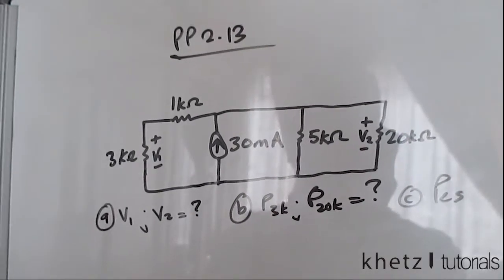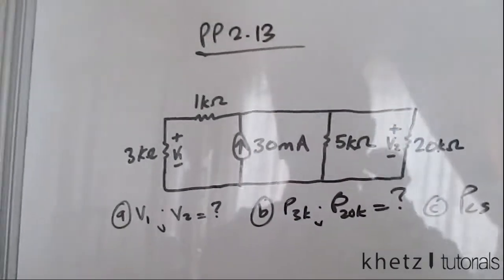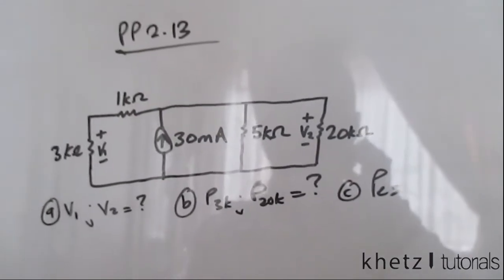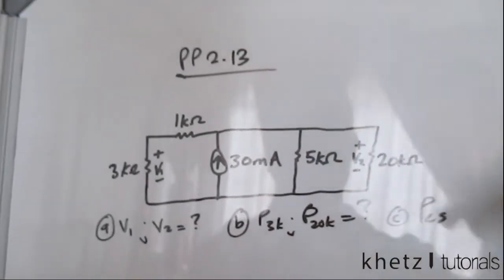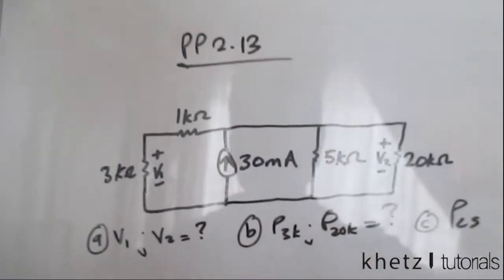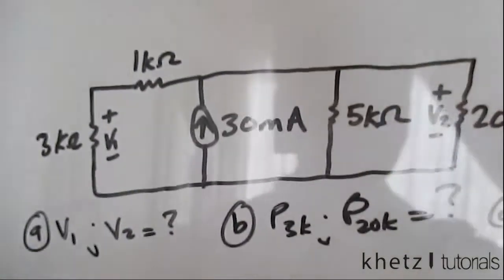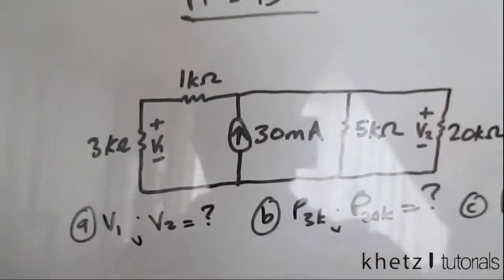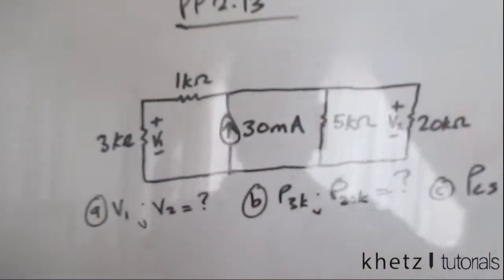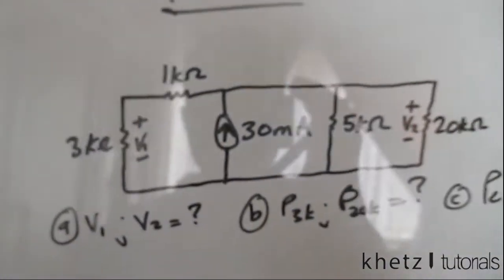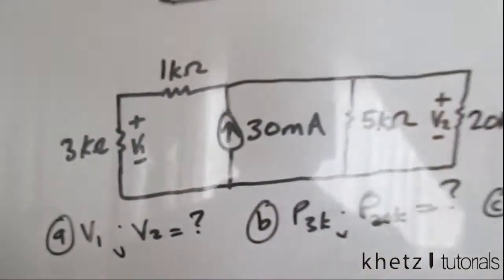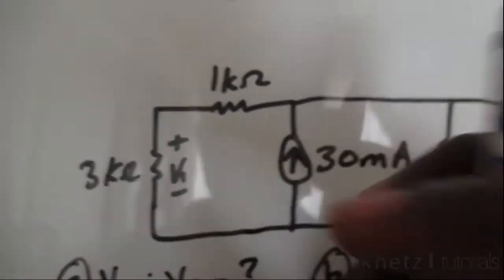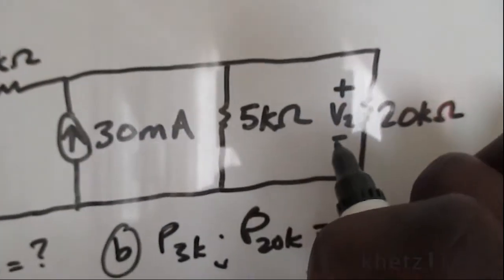Welcome to Cath Tutorials. In this video we're going to be doing practice problem 2.13. For the first part of the question we are asked to find V1 and V2, which are identified at their respective positions in the circuit.